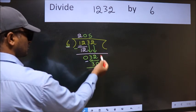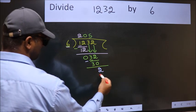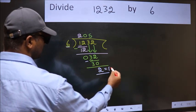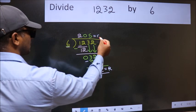No more numbers to bring down. So we stop here. This is our remainder and this is our quotient.